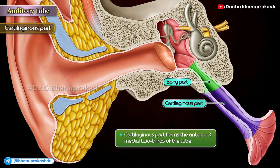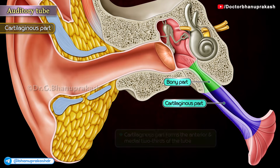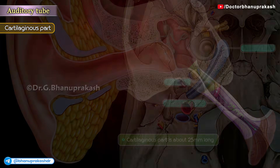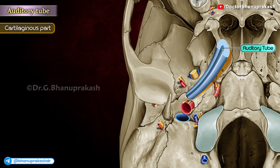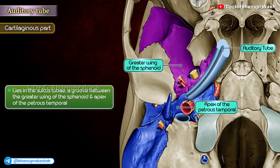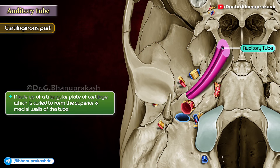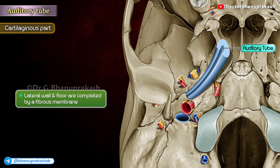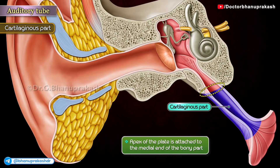The cartilaginous part forms the anterior and medial two-thirds of the tube. It is 25 mm long and lies in the sulcus tubae, a groove between the greater wing of the sphenoid and the apex of the petrous temporal. It is made up of a triangular plate of cartilage which is curled to form the superior and medial walls of the tube. The lateral wall and floor are completed by a fibrous membrane. The apex of the plate is attached to the medial end of the bony part.